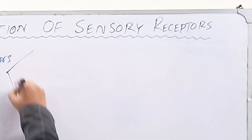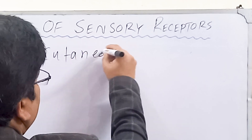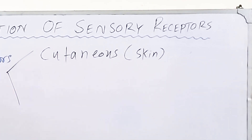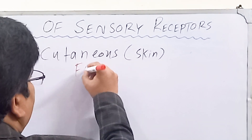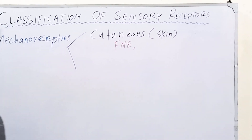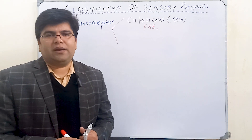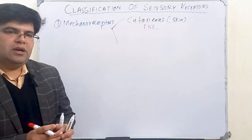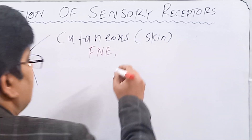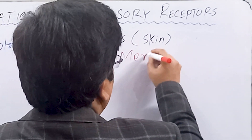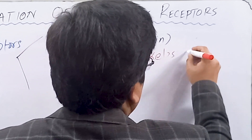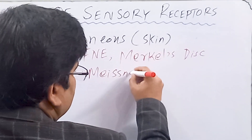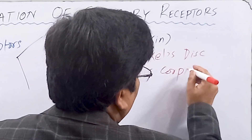Examples of cutaneous mechanoreceptors present in our skin — in the epidermis and dermis — are free nerve endings. Free nerve endings are receptors for several sensations carried by the spinothalamic pathway, like pain, temperature, itch, sexual sensations, and crude touch and crude pressure. Another kind of cutaneous receptor is Merkel's disc, and then Meissner's corpuscles, which are encapsulated receptors.